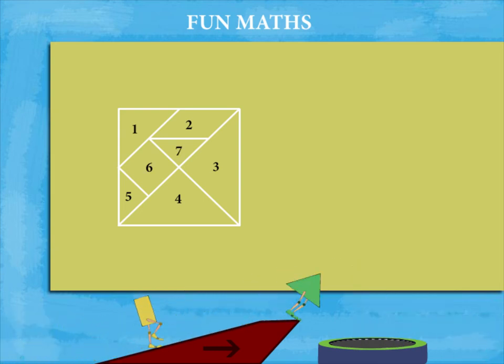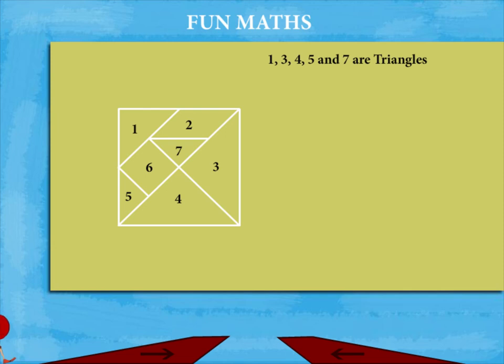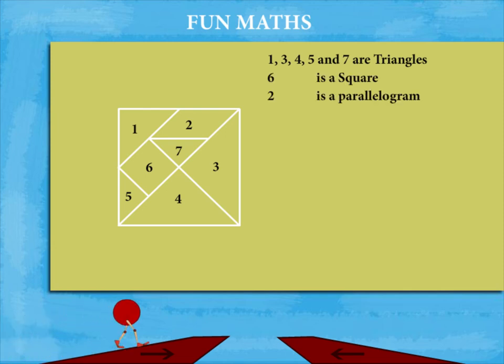Let's name these parts. 1, 3, 4, 5 and 7 are triangles. 6 is a square and 2 is a parallelogram.